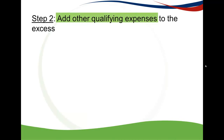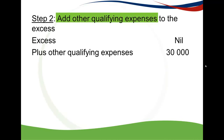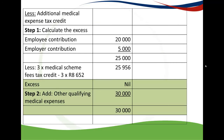The next step is to add your other qualifying expenses to the excess. Because our excess is zero, we simply add the other qualifying expenses of 30,000 Rand. Step two is done.